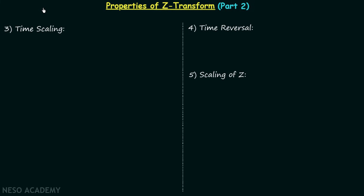In the last lecture we completed the linearity and time shifting properties of Z transform. Now in this lecture we are going to have discussion on the next three properties: time scaling, time reversal, and scaling of Z. So let's begin with the time scaling property of Z transform.